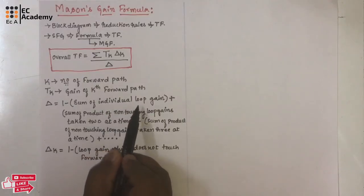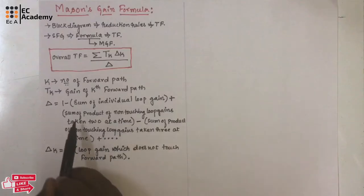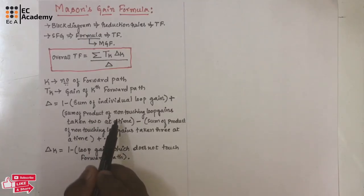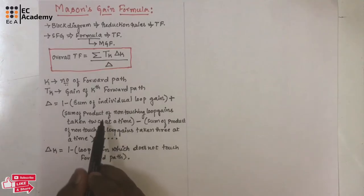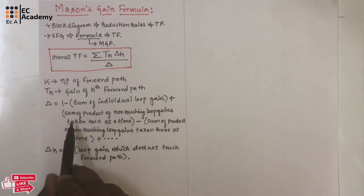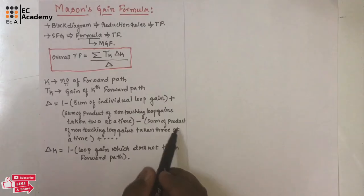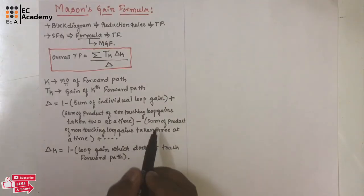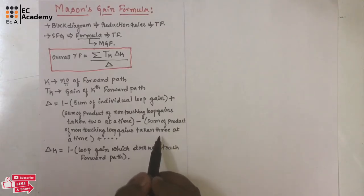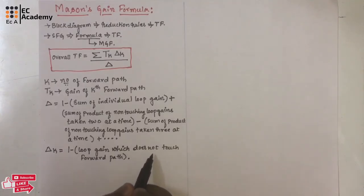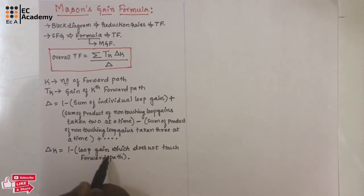The sum of individual loop gains means we take each individual loop, calculate the loop gain, and substitute in this place. Sum of product of non-touching loop gains taken 2 at a time means we consider 2 non-touching loops in the signal flow graph, take their product, and find the sum. Similarly for 3 non-touching loops. Delta_k is equal to 1 minus the loop gains of loops that do not touch the k-th forward path.